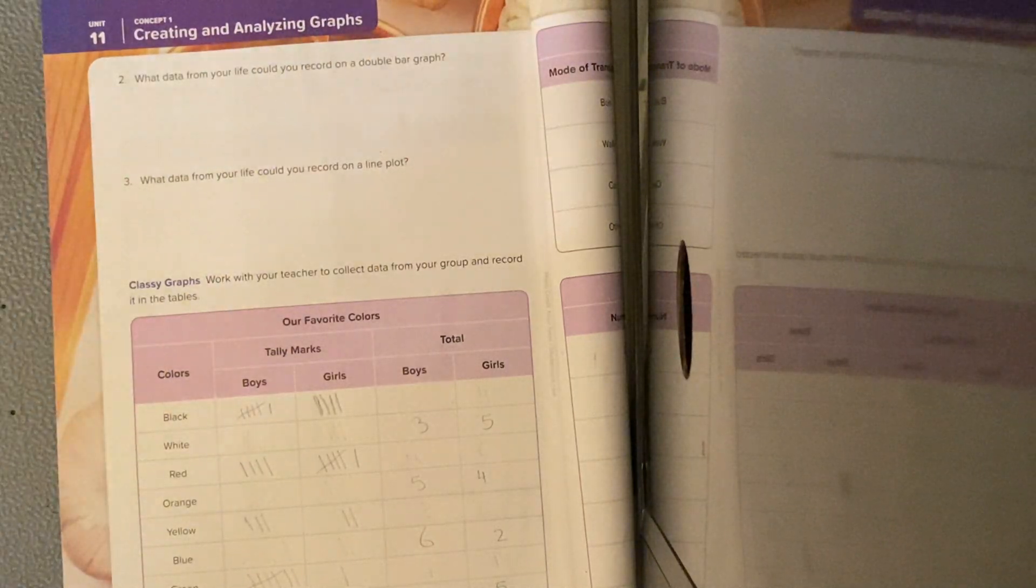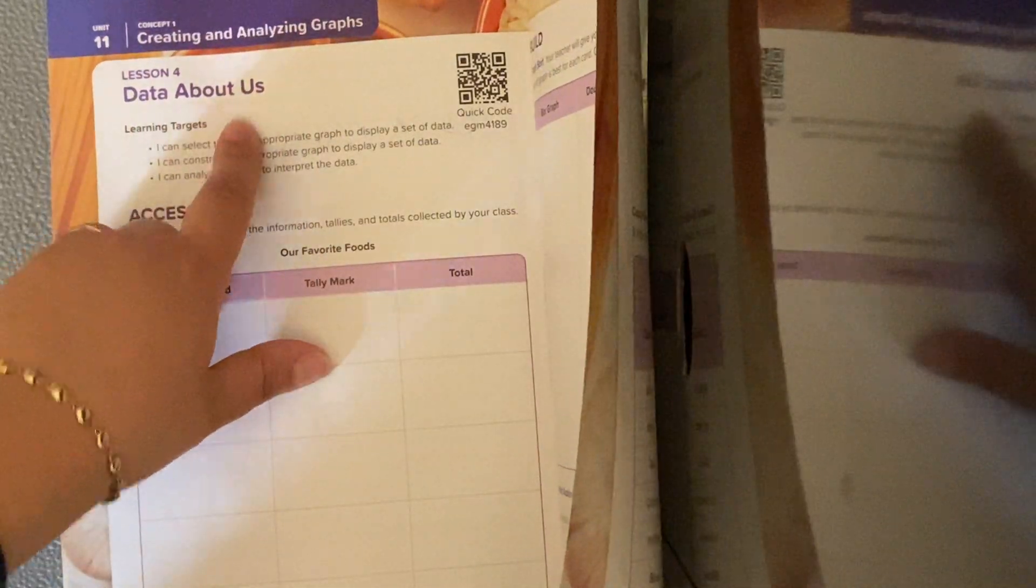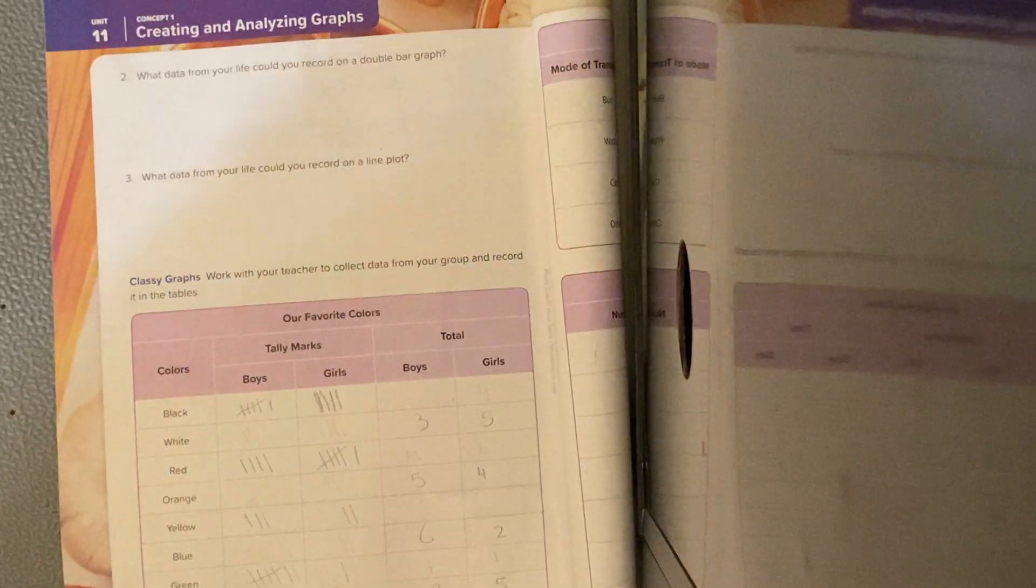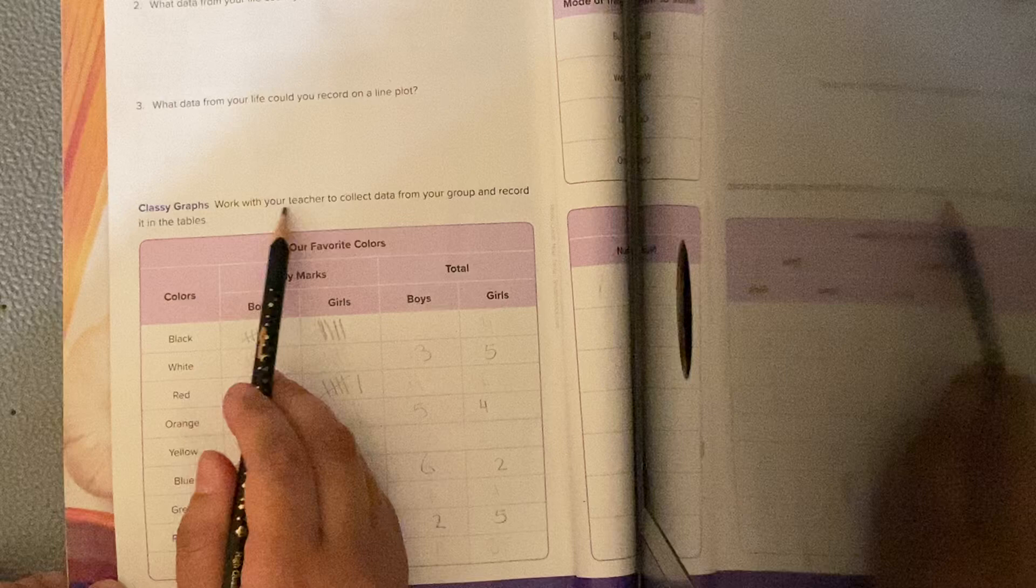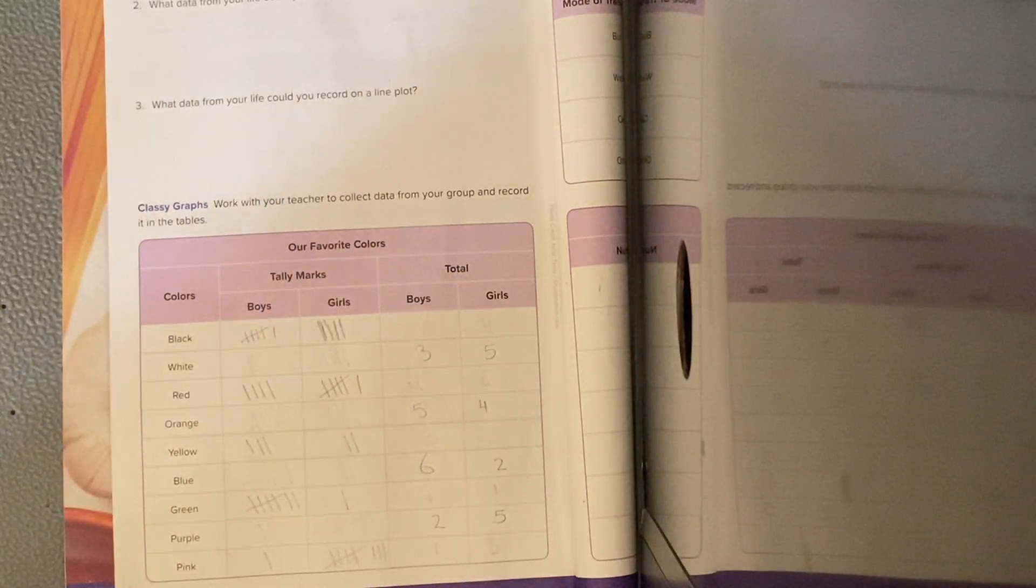Now we are on page 130, lesson 4 in chapter 11, here data about us. The table mark is talking here: work with your teacher to collect data from your group and record it in the tables.